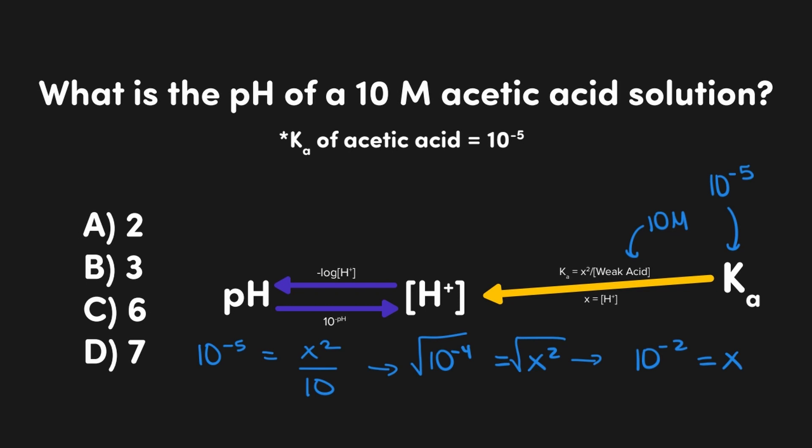So in total, our concentration of H+ is going to be 10 to the negative 2, which would yield a pH of 2. Meaning here, A is the correct answer.